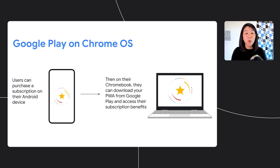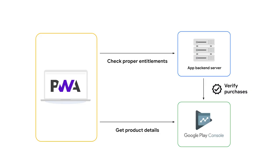If you choose to support and optimize your web app for Chrome OS, you can bring it to a whole new audience of users. You will also be able to provide a more seamless experience for Chromebook users who are already using your PWA on their Android devices. Users can purchase a subscription on their Android phone, then jump onto their Chromebook to enjoy all their new benefits there, and vice versa.